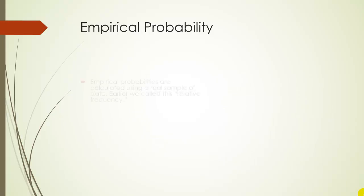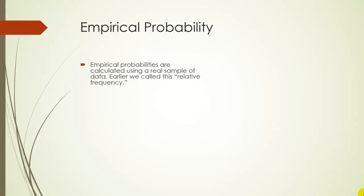An empirical probability is a probability that's based on data. Earlier we actually did empirical probabilities but we called them relative frequencies. To calculate a relative frequency or an empirical probability, you just take the ratio of the frequency of the event occurring over the sample size, so f over n.